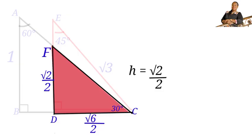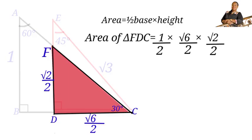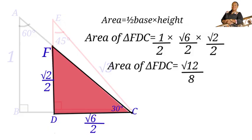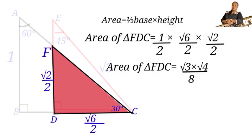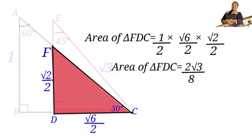Now that we have the base DC = √6/2 and height FD = √2/2 of triangle FDC, we can find its area. Area = ½ × base × height = ½ × (√6/2) × (√2/2) = √12/8 = (√3 × √4)/8 = 2√3/8 = √3/4. The area of the red shaded region is √3/4.